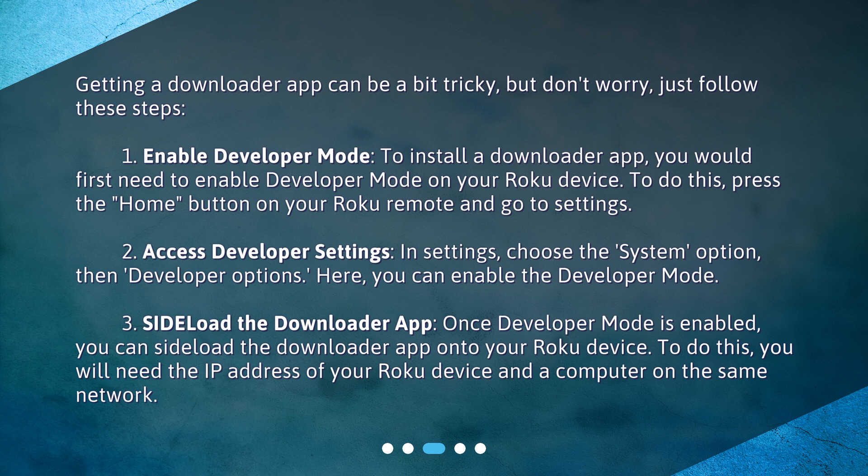To do this, press the Home button on your Roku remote and go to Settings. Step 2: Access developer settings. In Settings, choose the System option, then Developer options. Here, you can enable the Developer mode.